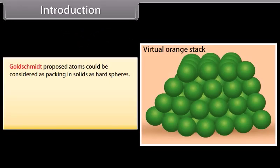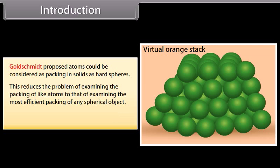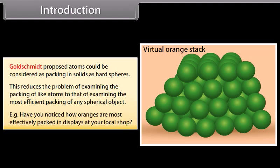Goldschmidt proposed that atoms could be considered as packing in solids as hard spheres. This reduces the problem of examining the packing of like atoms to that of examining the most efficient packing of any spherical object. For example, have you noticed how oranges are most effectively packed in displays at your local shop?